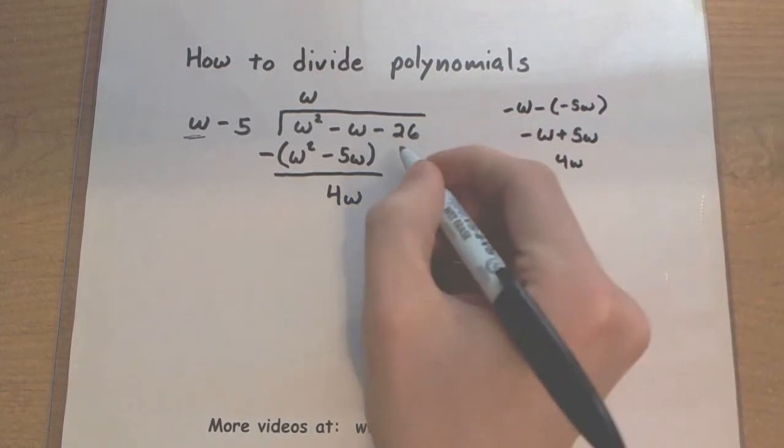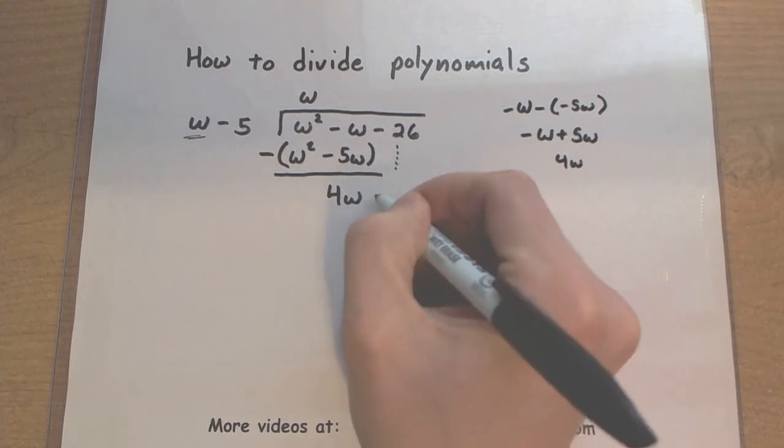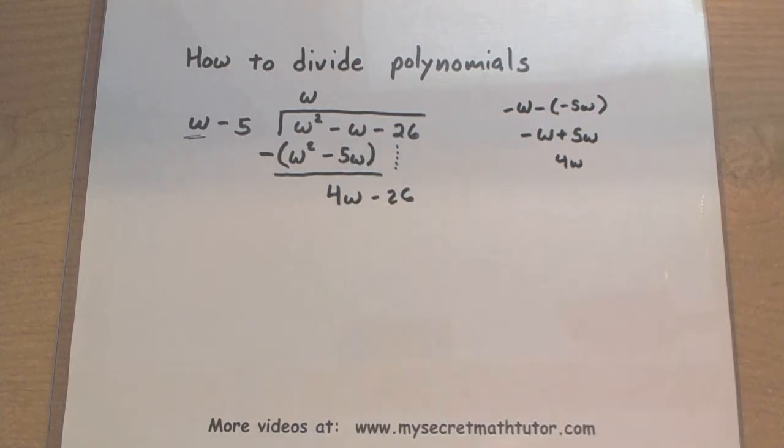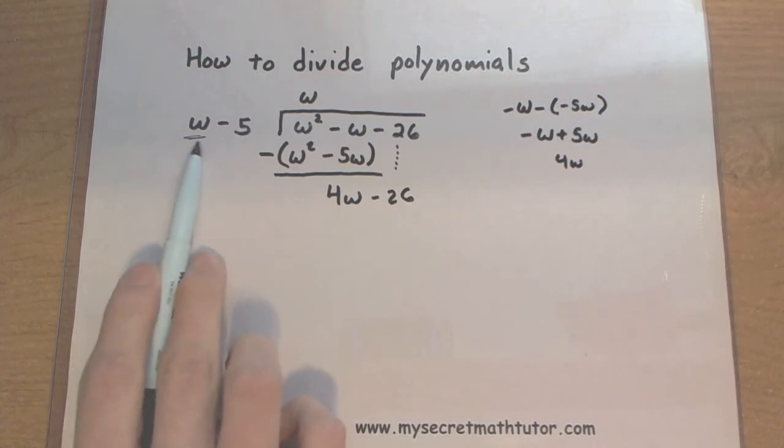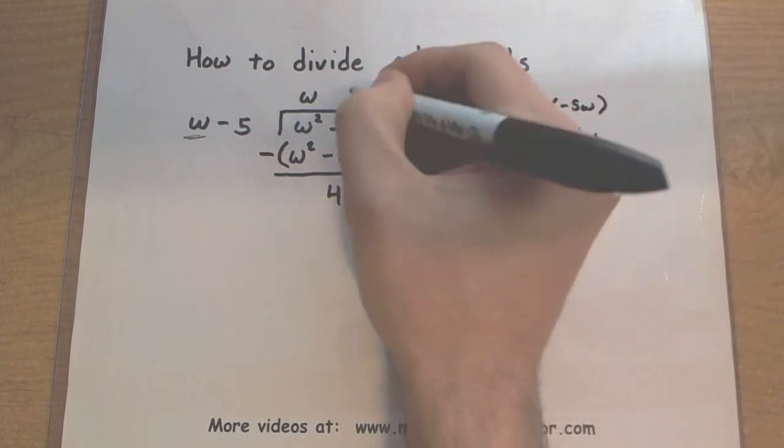All right, so let's continue on with this process. I'm going to bring down the minus 26 and basically do it all over again. So again, I think to myself, what multiplied by w will give me a 4w?